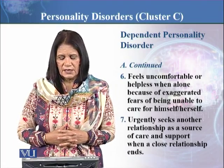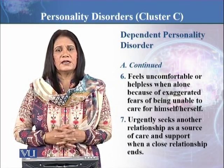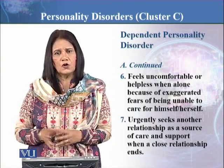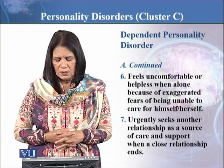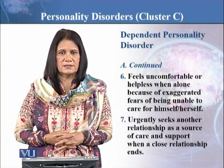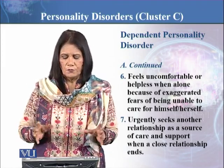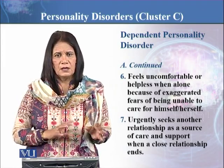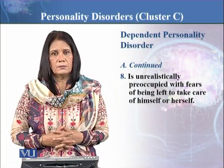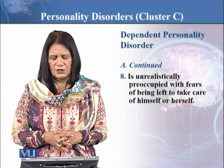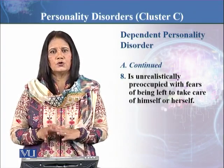Symptom seven: urgently seek another relationship as a source of care and support when a close relationship ends — اگر کوئی friend یا close relative جو آپ کا خیال رکھ رہا تھا وہ نہیں ہے، تو وہ فوراً اس کی substitute relationship ڈھونڈنے کی کوشش کریں گے۔ And lastly: unrealistically preoccupied with fear of being left alone or that nobody is there to take care of them.